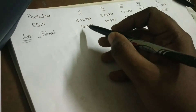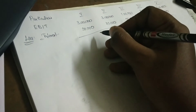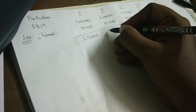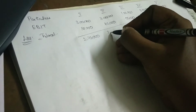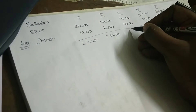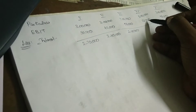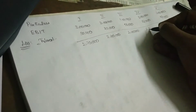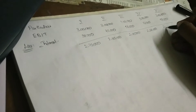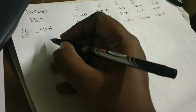Now we deduct the interest from EBIT. 3 lakh minus 30,000 = Rs. 2,70,000. 3 lakh minus 40,000 = Rs. 2,60,000. 3 lakh minus 55,000 = Rs. 2,45,000. 3 lakh minus 72,000 = Rs. 2,28,000. And 3 lakh minus 98,000 = Rs. 2,02,000. This gives us the net income — the earnings available to equity shareholders.